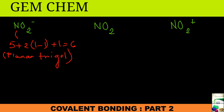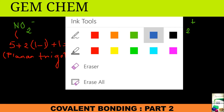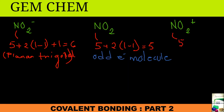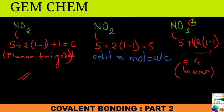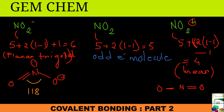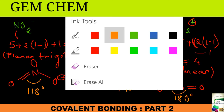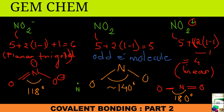For NO₂, the count is 5 + 2(1) − 1 = 5, making it an odd electron molecule. For NO₂⁺, 5 + 2(1) − 1 − 1 = 4, so it is linear. The bond angles are approximately 118° for NO₂⁻ and 180° for NO₂⁺. Since NO₂ has an electron count between these two, its bond angle must be between 180° and 118°, which is approximately 140°.